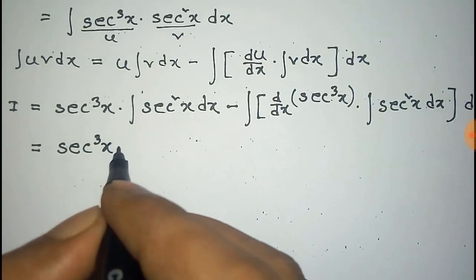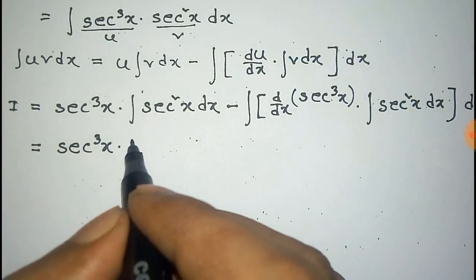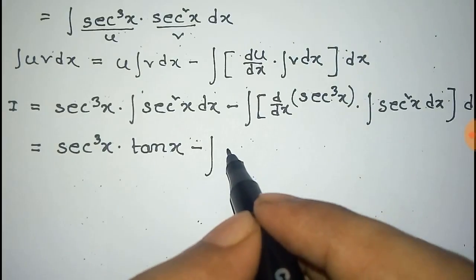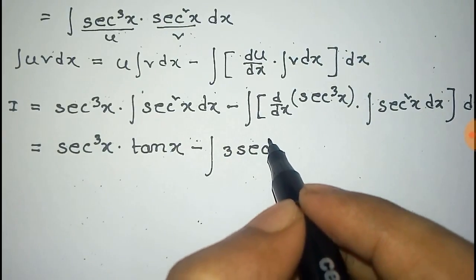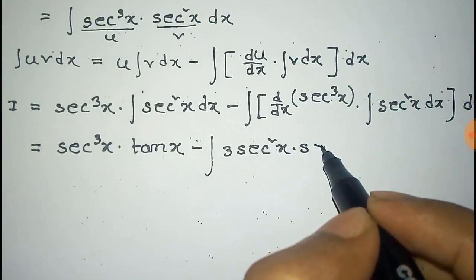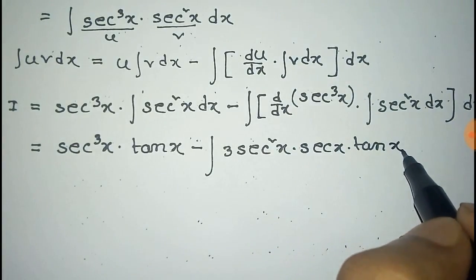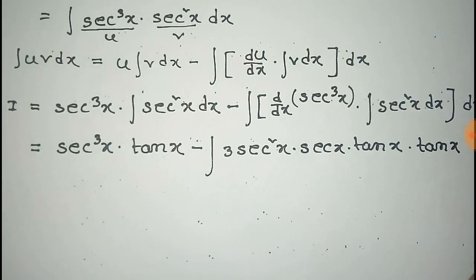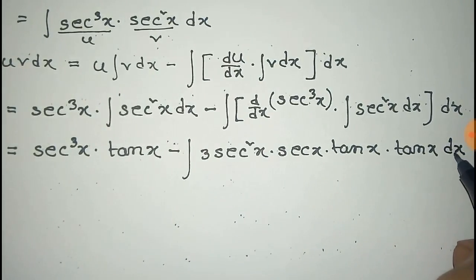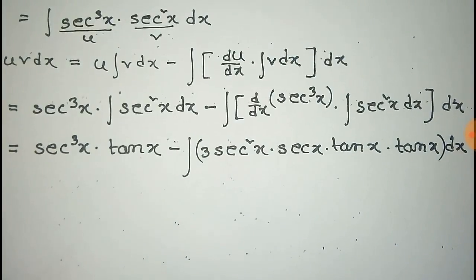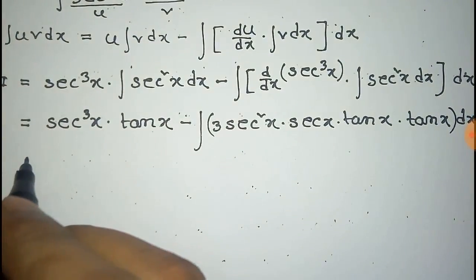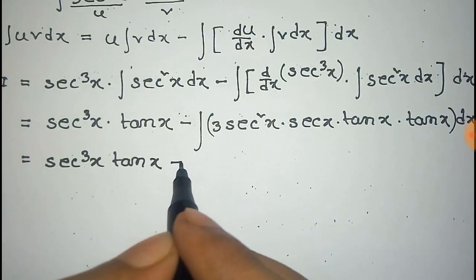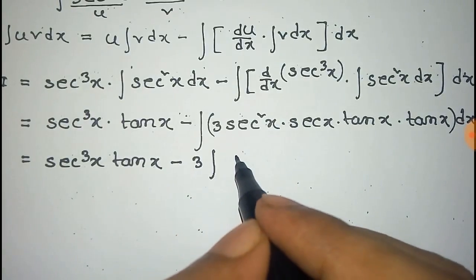This equals sec to the power 3x into tan x — since the integration of sec square x is tan x — minus the total integration, where the derivative of sec cubic is 3 sec square x into sec x into tan x, and the integration of sec square x is tan x.